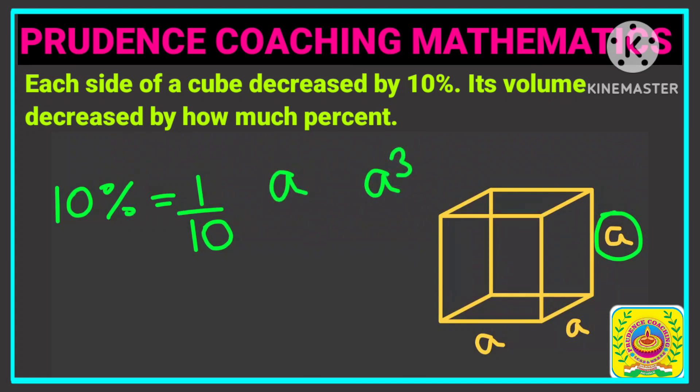Now it is said that its volume decreased by how much percentage you are going to calculate. So let us assume that the side of this cube to be 10. That is the base of this one. Now if it is 10, after decreasing means if we decrease or deduct 1 unit, it is becoming what? It is becoming 9.